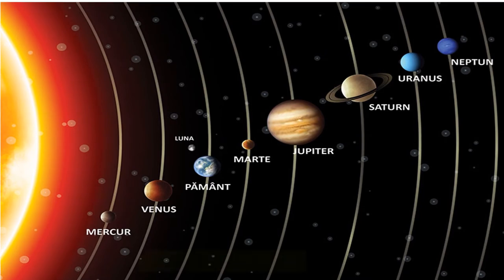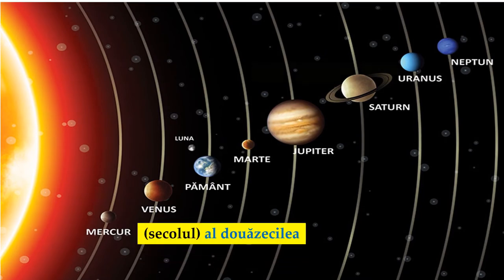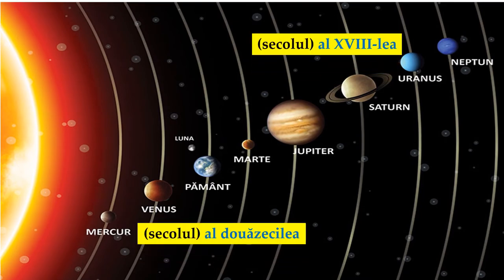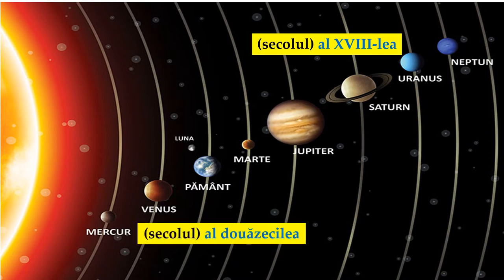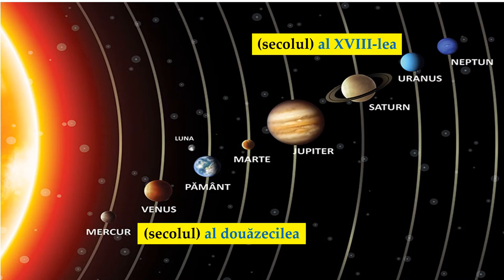Aceste două numerale ordinale determină substantivul secolul. În secolul al XX-lea, prima sondă spațială a explorat planeta Mercur. În secolul al XVIII-lea a fost descoperită planeta Uranus.